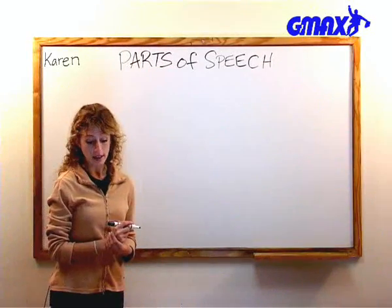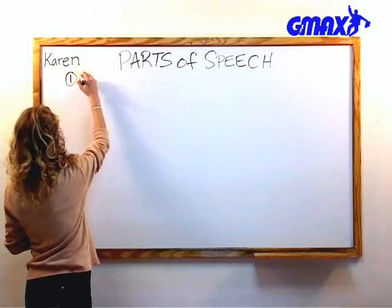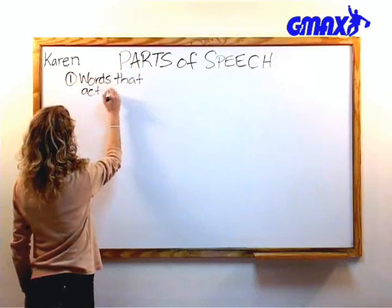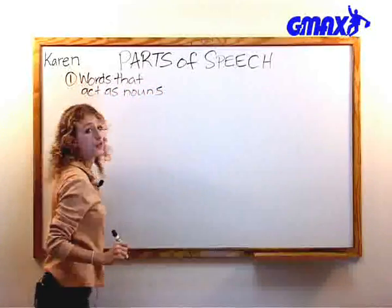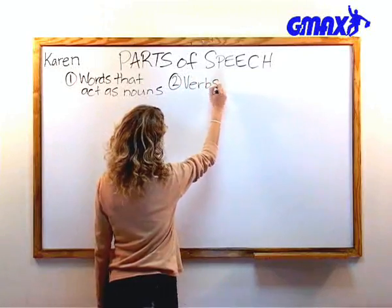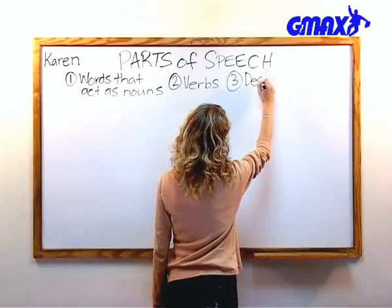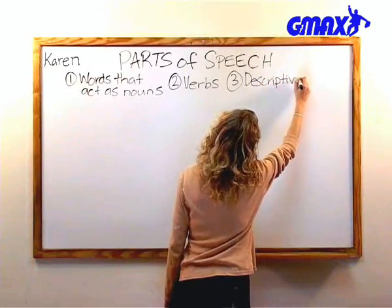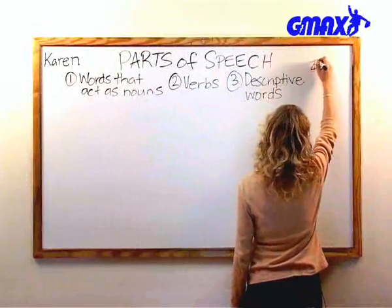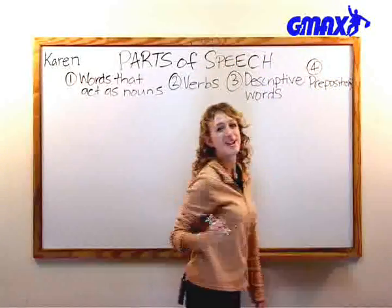There are four important parts of speech for the GMAT. The first is words that act as nouns. Verbs. Descriptive words. And prepositions.